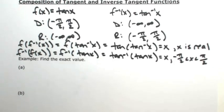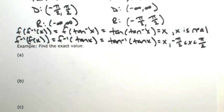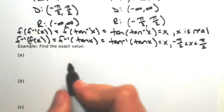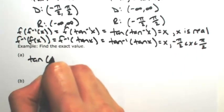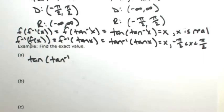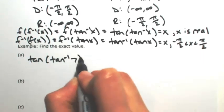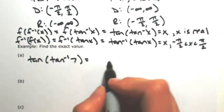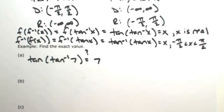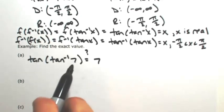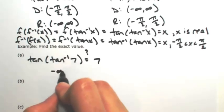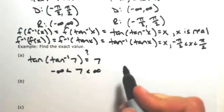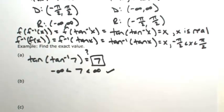Let's do some examples making sure the domain is satisfied. The first composition is easier because as long as x is real they will undo each other. So let's do tangent of inverse tangent of 7. This should undo and leave us back with 7. Let's verify: the domain of inverse tangent is the range of tangent, which is all reals. Since 7 is real, they will undo, giving us back 7.